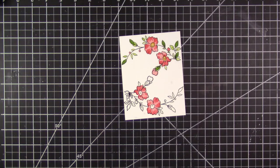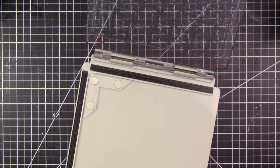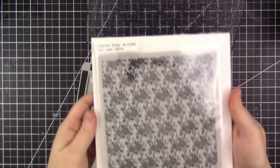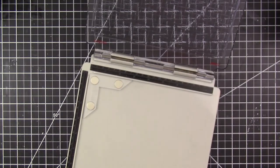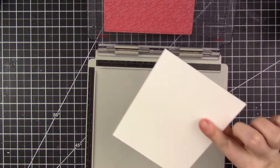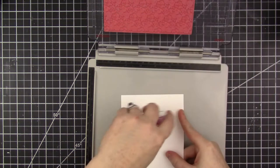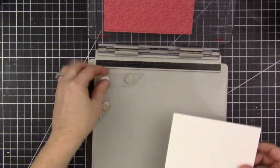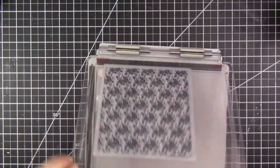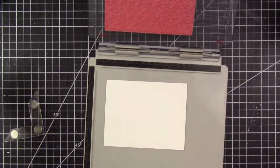I'm using the Modern Rose Blooms background stamp from Simon Says Stamp. I love this background stamp—it reminds me of elegant floral wallpaper. I'm stamping it in my Tim Holtz stamping platform, and I put a temporary piece of adhesive on the back of the paper so that it will stay in place while I stamp it.